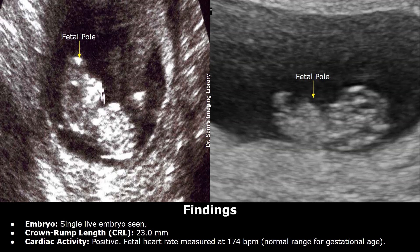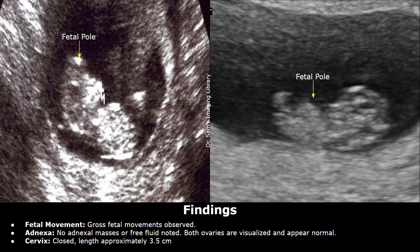Crown rump length: 23 mm. After the CRL, we can write about cardiac activity and mention the heart rate. Cardiac activity: positive. Fetal heart rate measured at 174 BPM, normal range for gestational age. We can also add fetal movement: gross fetal movements observed. This is not a very important line, but you can mention it if you like.